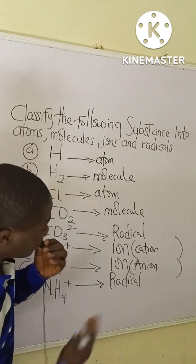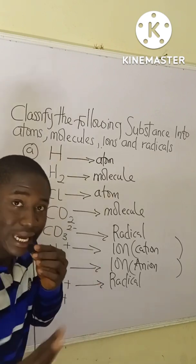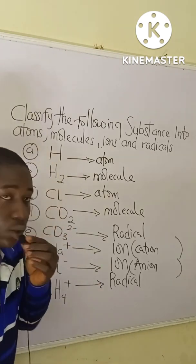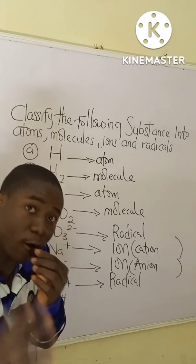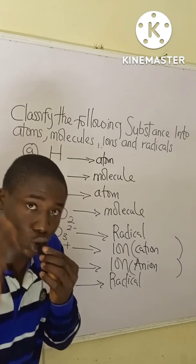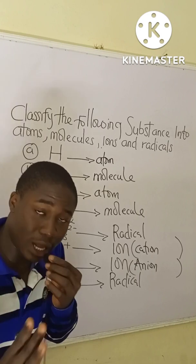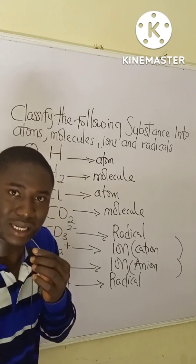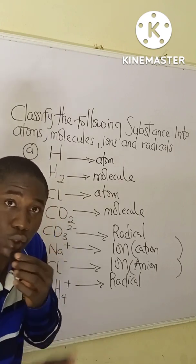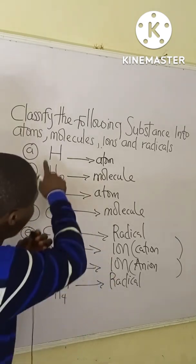You can see the question written on the board. It is very easy. The question says: classify the following substances into atoms, molecules, ions, and radicals. Now to answer this question is very easy.